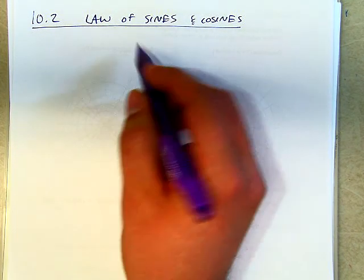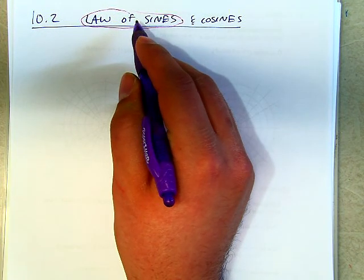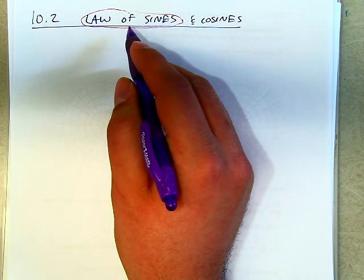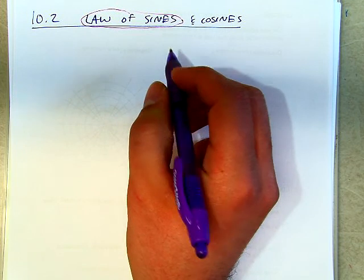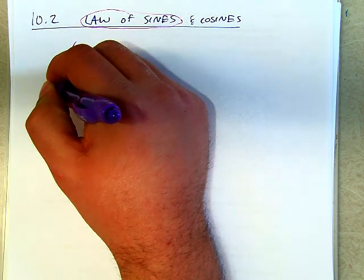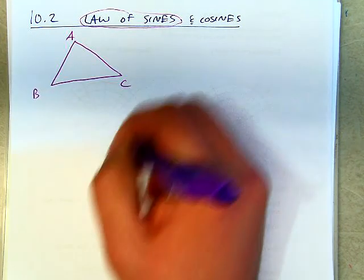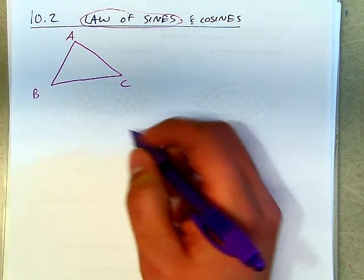We are going to spend a little bit of time going off a little bit more with the law of sines because you probably didn't do as much as we're going to do this year with it back in Honors Geometry. In case you forgot, here's a regular old triangle ABC, just so that we are clear on the notation.